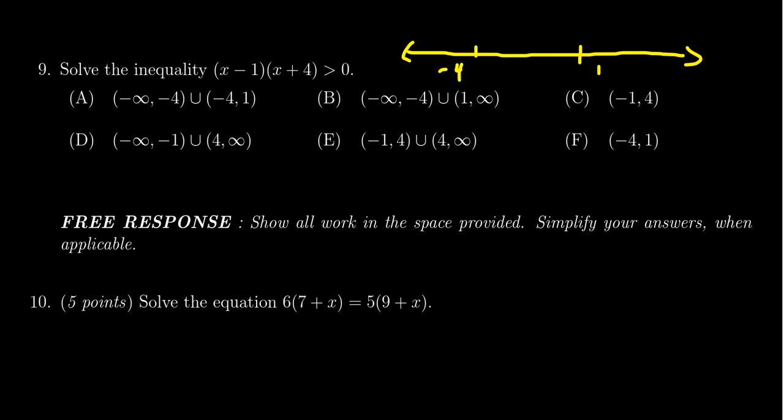The leading coefficients are both positive, so our parabola would concave upward. This is the basic picture we want. When you look at greater than 0, this suggests that we want to be above the x-axis. So we are going to grab the wings of the bird here.